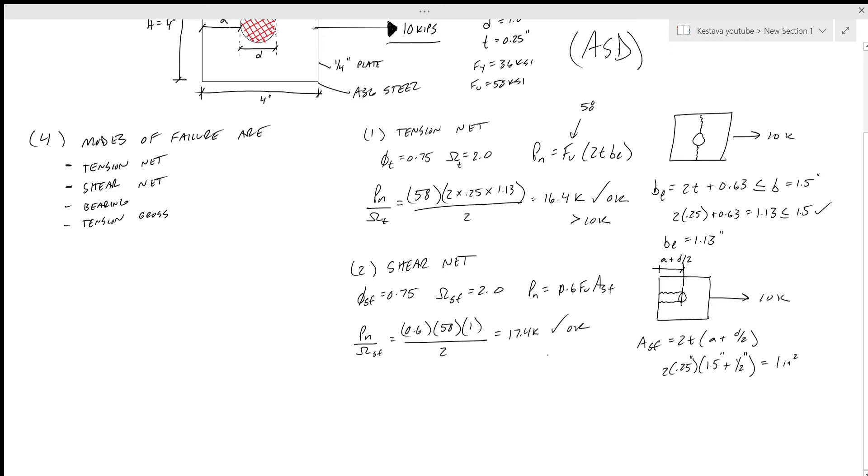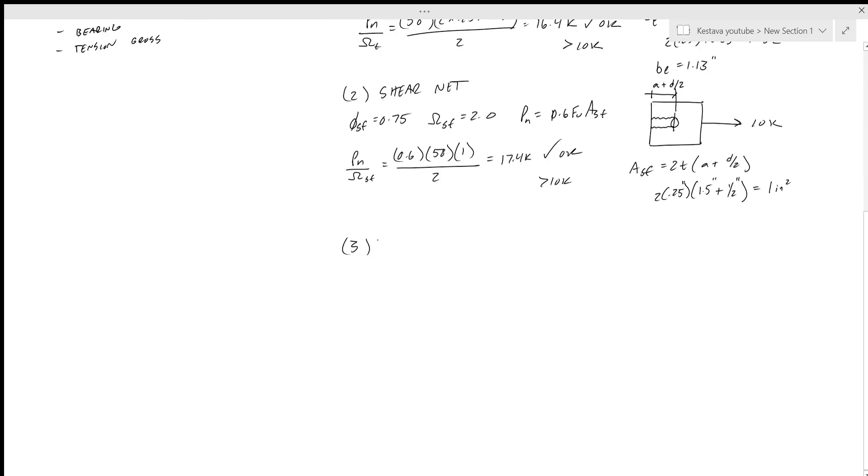Mode 3: bearing. And bearing is exactly what you would think – you have this happening, basically you have bearing on that steel and compressing that local portion of steel. So if you were to take a cross section through there, that would look like this: you have your bolt hole, and that would be the area that the bolt is bearing on. That is equal to d, which is the diameter of your bolt, and then your thickness t. And for bearing, phi equals 0.75 or omega equals 2.0.